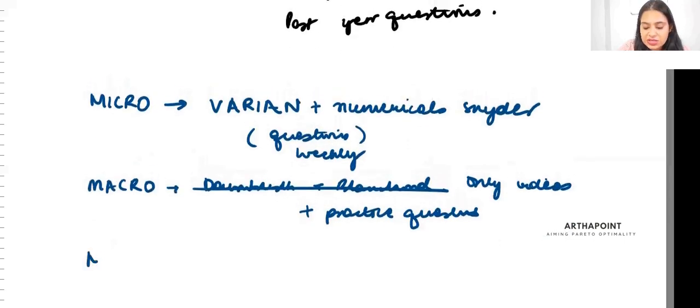For math, Sydsaeter and Hammond is enough. Or ACGN.